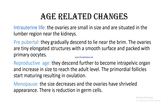Age-related changes in the ovary. In intrauterine life, the ovaries are small and situated in the lumbar region near the kidneys. In prepubertal life, they gradually descend toward the pelvic brim and are tiny elongated structures with a smooth surface packed with primary oocytes. At reproductive age, they descend further to become intrapelvic organs, increase to adult size, and primordial follicles start maturing, resulting in ovulation. After menopause, the size decreases, the ovaries have a shriveled appearance, and there is reduction in germ cells.